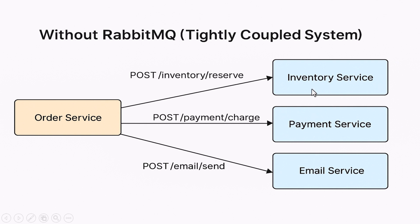Now imagine if your order service made direct calls to every other service — the inventory service, the payment service, and the email service — one after the other. That might work at first, but there's a big problem. If even one of those services is down or slow, your entire order flow breaks. If the payment service is delayed, the order service waits. If the email service is offline, the whole flow can get stuck or crash. This approach creates tight coupling — every service becomes dependent on the others being available at the exact moment of the request. That's hard to scale, hard to maintain, and definitely not reliable.